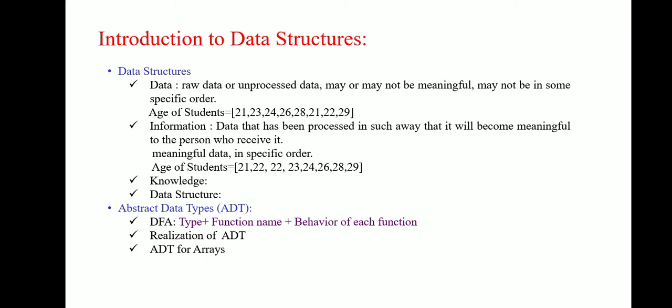Then next concept is called abstract data type. What is abstract data type? Abstract data type is a triple of D set of domains, F sets of functions, and A axioms. In ADT, all the implementation details are hidden.